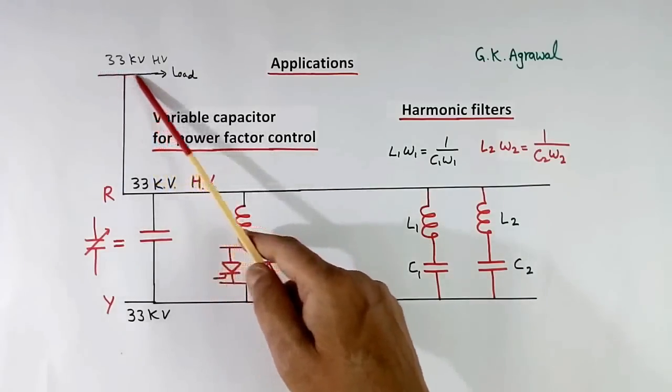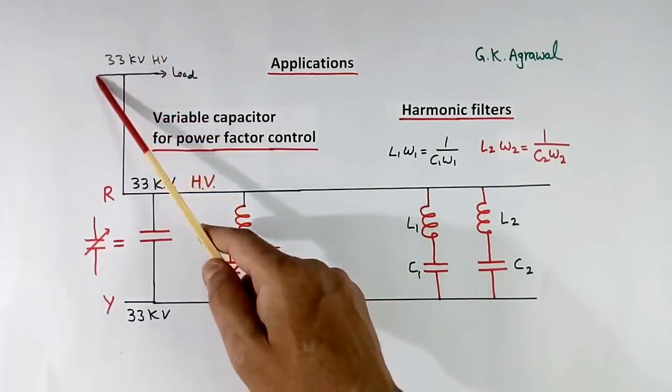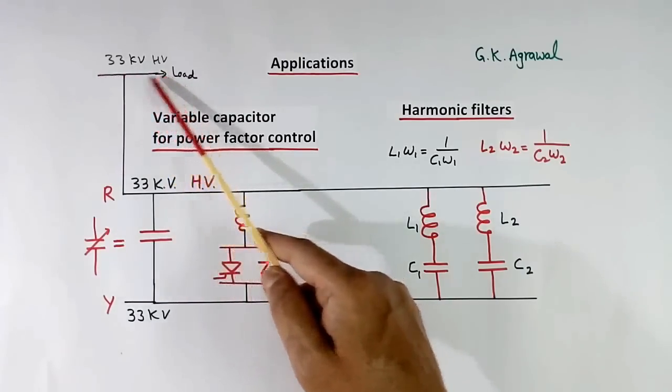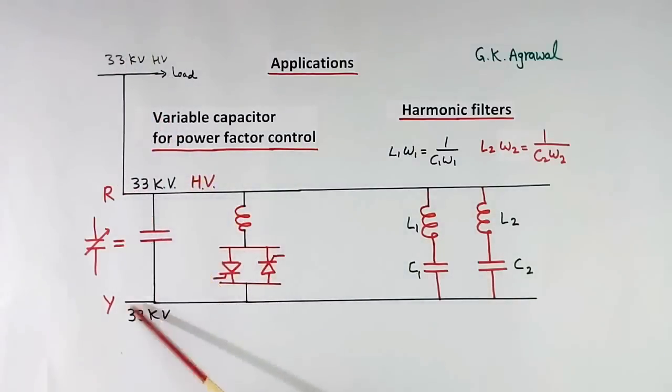Here I have shown one 33 kV high voltage AC supply. Here I have shown one wire, there will be actually three. I have shown R Y, there will be one more.